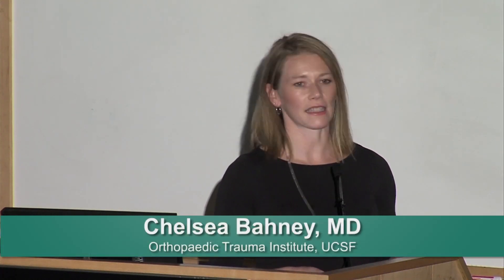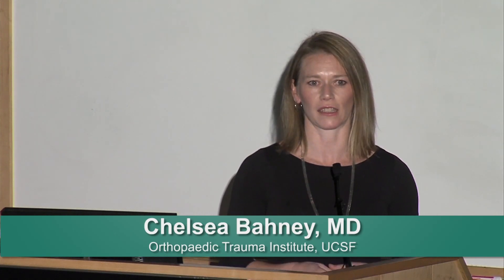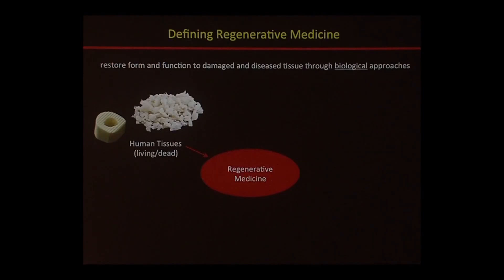The idea of regenerative medicine is how can we restore form and function of diseased tissue through biological processes instead of just mechanical and hardware processes. Regenerative medicine could be transplanting human tissue — living tissue, we call that autograft. Take bone from one part of your body and transplant it to another, from a part that's not load-bearing so you could spare it. You can also use dead tissues, so allograft tissue. This is still classified as regenerative medicine because you're using the biologics, and it's probably the most simple form.